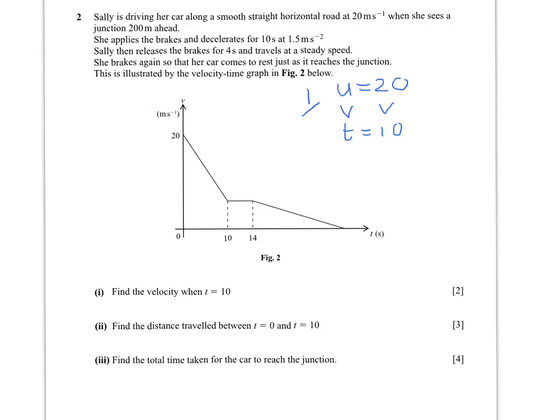And the acceleration in the first part of the moment is minus 1.5. So v equals u plus at, so that is 20 minus 15, which gives us 5 meters per second.